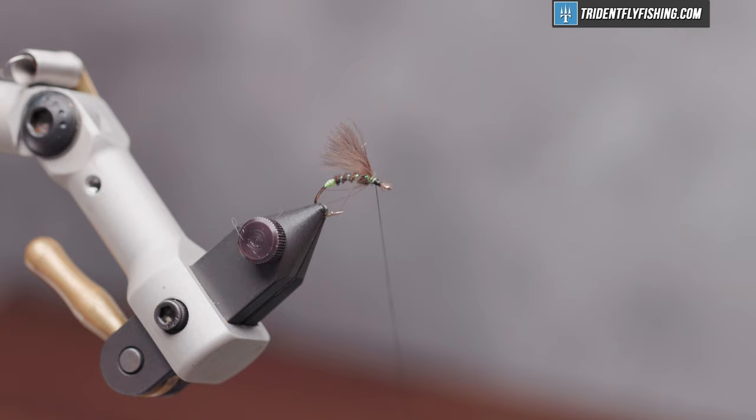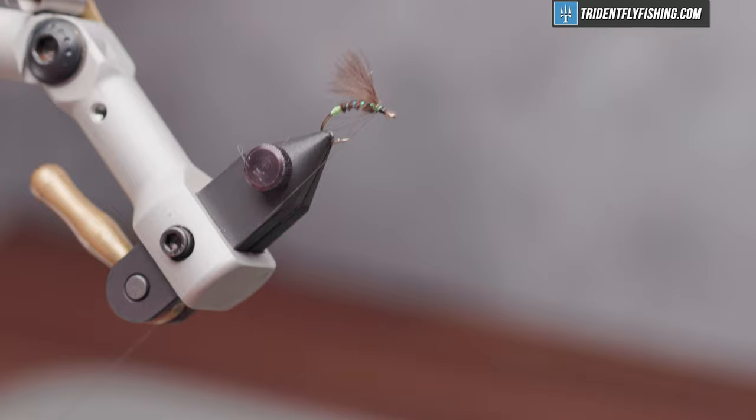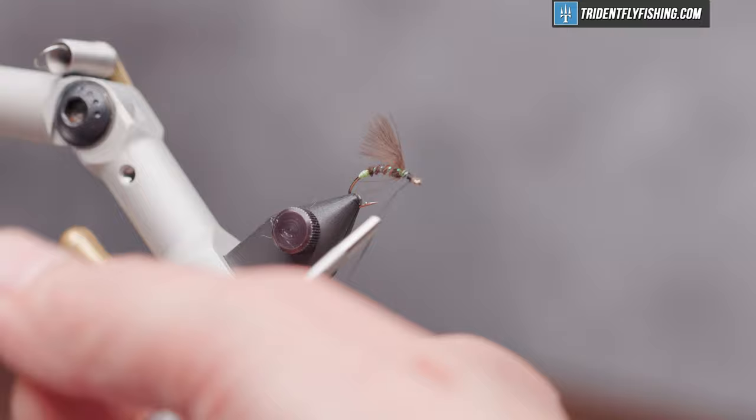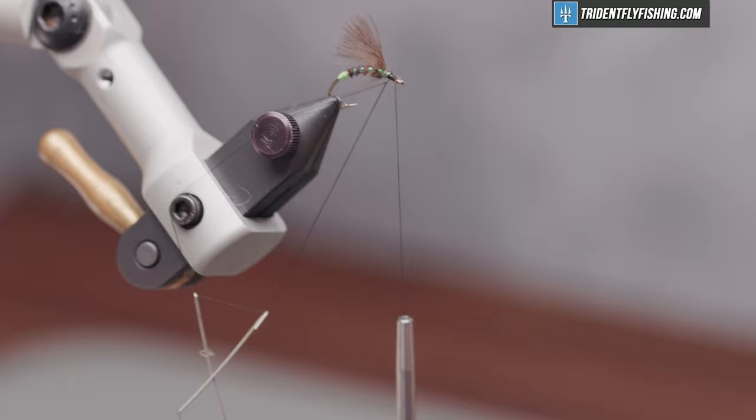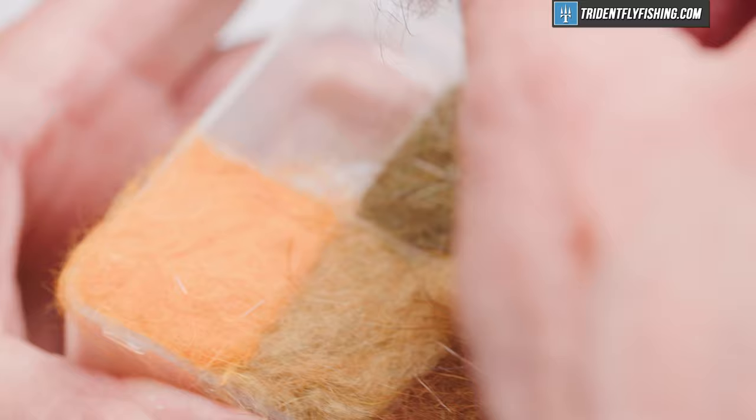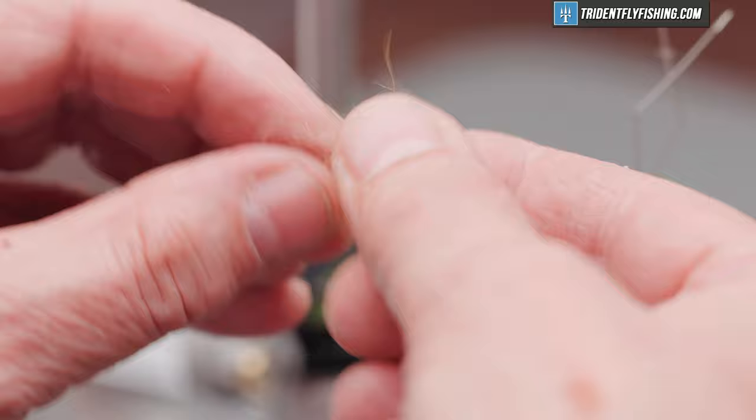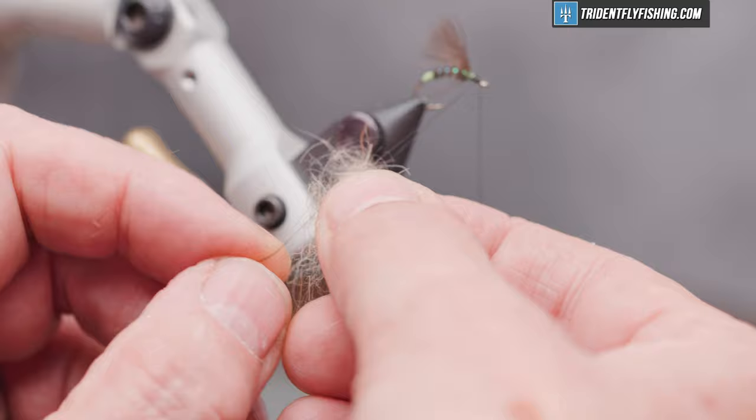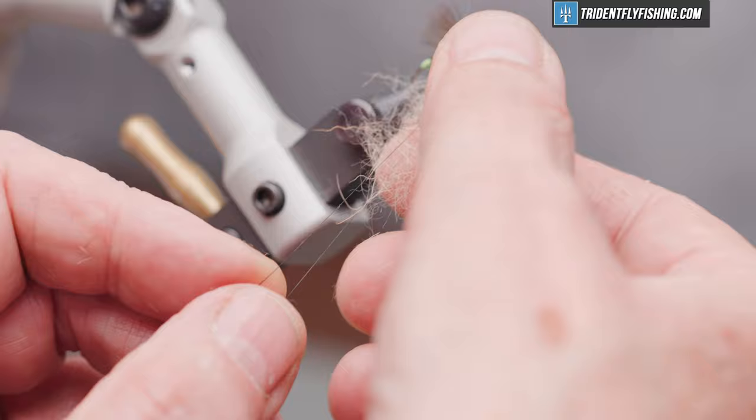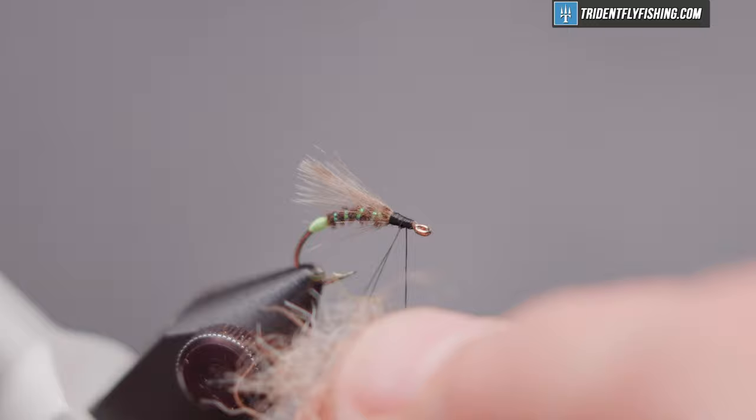So the thorax of the fly is next. And we're going to form a real small dubbing loop here. And that's going to be made from some Nature's Spirit snowshoe rabbit foot dubbing. And the color is Hare's Ear. Nice, long, spiky material. Just a small pinch of this is all we're going to need. The thorax isn't very big. But by putting it in a dubbing loop, it makes the thorax nice and spiky, rather than just dubbing it on the thread.